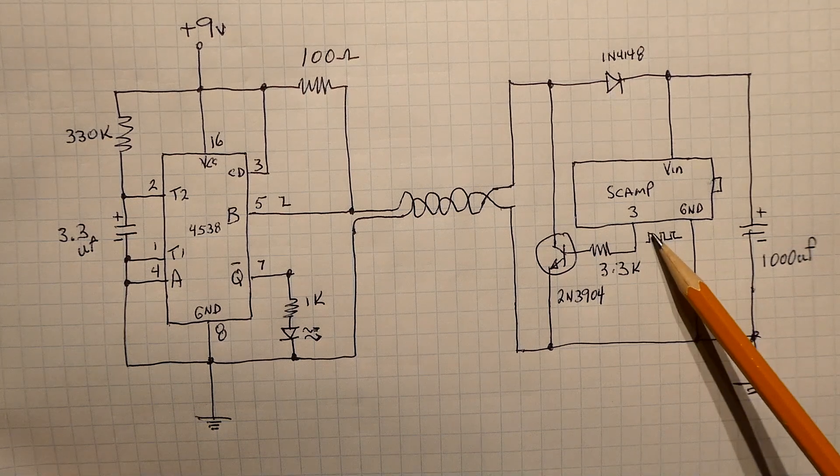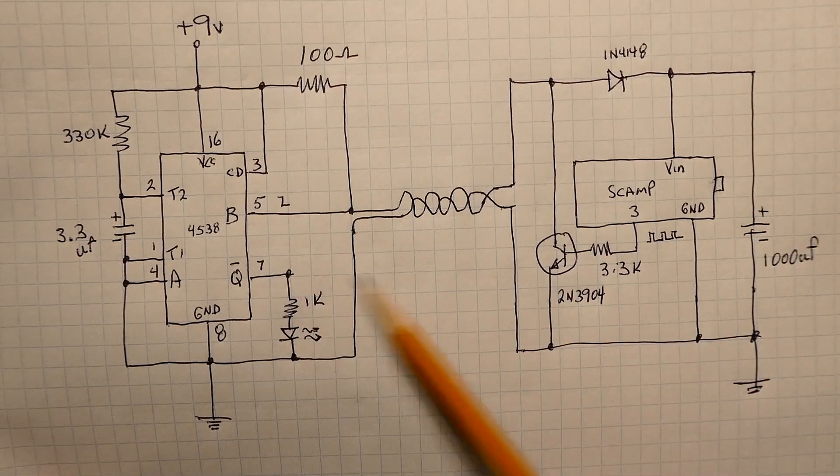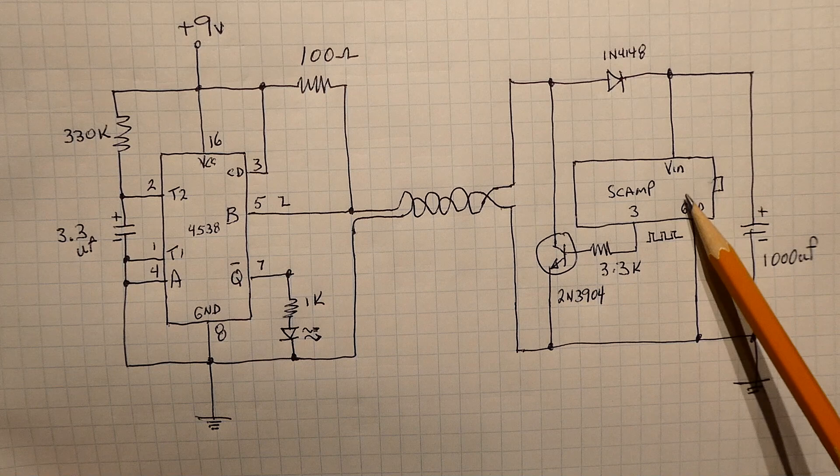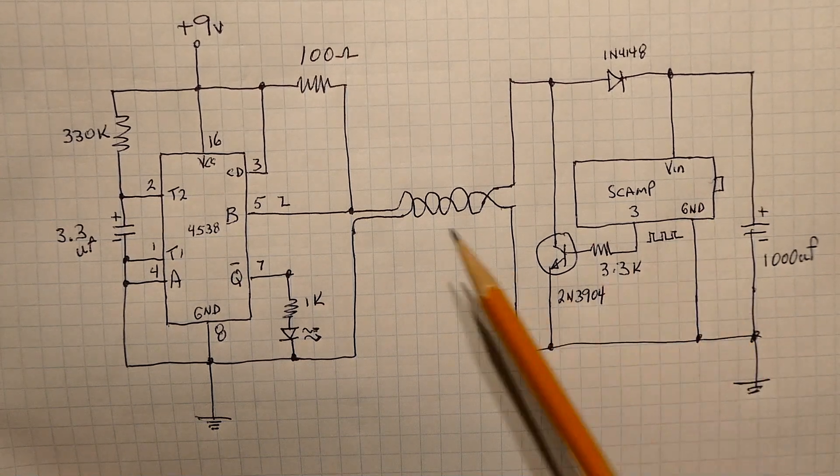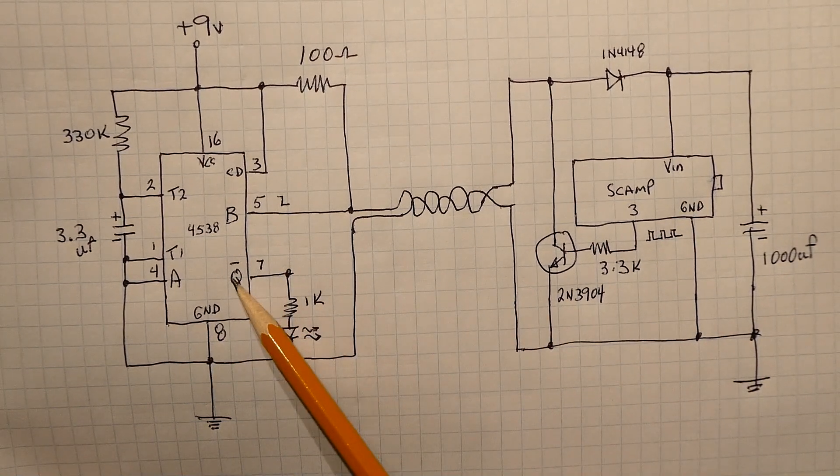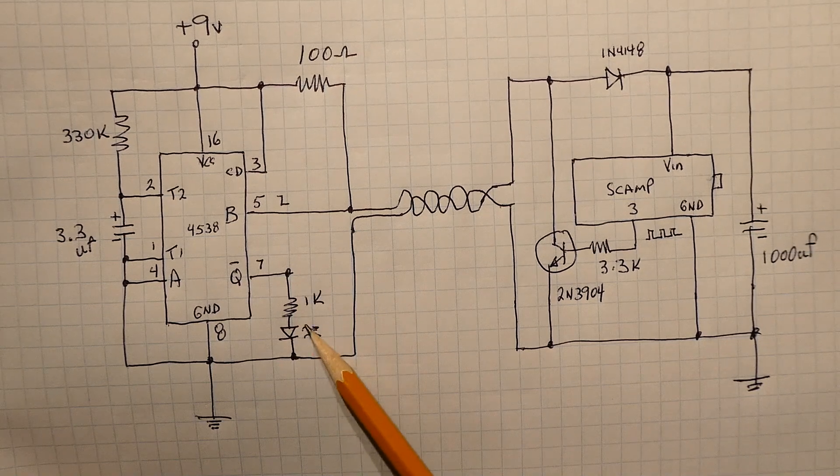So whenever the temperature is above zero we're getting these pulses which is keeping the Q-not low, and when the temperature goes below zero these pulses will disappear, the monostable will time out and the Q-not will go high and we'll get alarm on the LED.